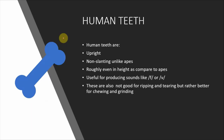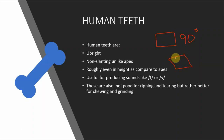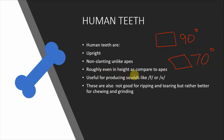Now we are going to look at qualities of human teeth, lips, mouth, larynx and pharynx which make us different from other creatures. Human teeth are upright and non-slanting, unlike apes. Our teeth are at roughly 90 degrees, whereas if you look at monkeys and gorillas, their teeth come outside of their mouth at around 60 or 70 degrees. Our teeth are also roughly even in height compared to apes.